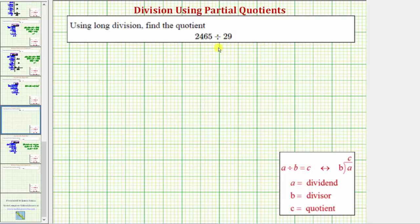For this example, instead of using the traditional long division algorithm, we'll be using the method of partial quotients. The first step is to write the quotient in long division form, which is this form here.